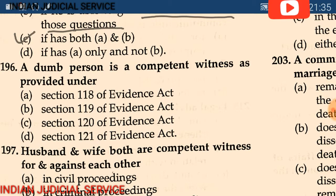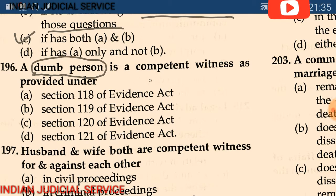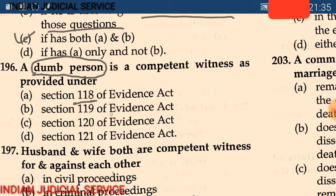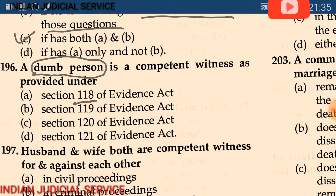Question 196: A dumb person — a very important topic — is a competent witness as provided under section — (A) 118, (B) 119, (C) 120, (D) 121. The answer is option B: section 119. A dumb person is provided for under section 119.